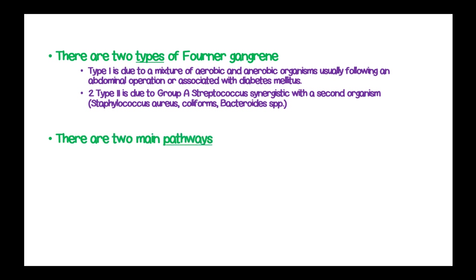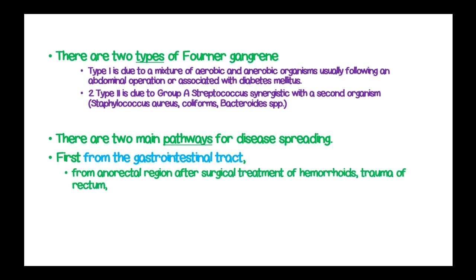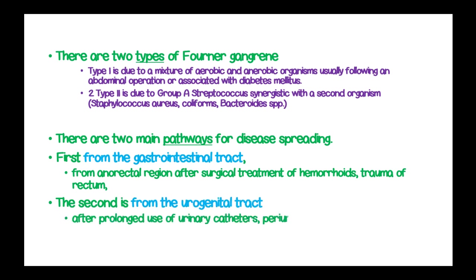There are two main pathways for spreading. The first is from the gastrointestinal tract, from an anorectal region, surgical treatment of hemorrhoids, or trauma of the rectum. The second pathway is from the urogenital tract, after prolonged use of urinary catheters, periurethritis, and instrumental dilatation of the stenosis of the ureter.